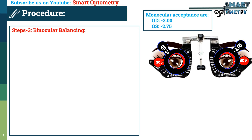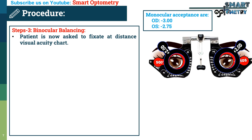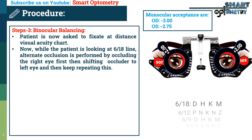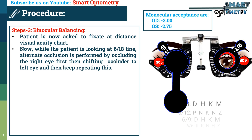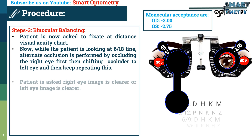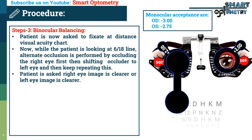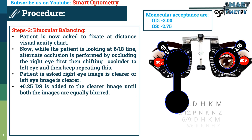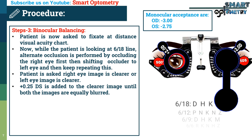Step 3 — binocular balancing. The patient is now asked to fixate the distance visual acuity chart. Due to the NRA power added, they will see the 6/6 line as completely blurred. Suppose the patient can read the 6/18 line. While looking at that line, alternate occlusion is performed — occluding the right eye first, then shifting the occluder to the left eye, repeating this alternately. The patient is asked whether the right eye image or the left eye image is clearer.